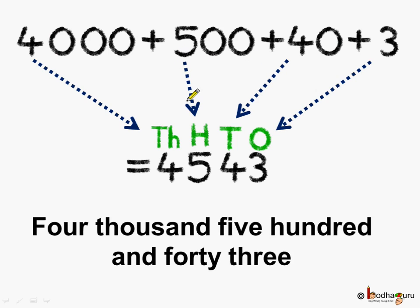How many hundreds are there? There are 5 hundreds. So let's put 5 at the hundreds place. Lastly, there are 4000, so put 4 at the thousands place. What do we get? We get 4,543.